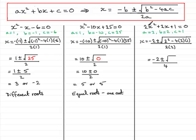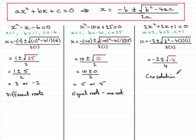What about this final equation: 2x squared plus 2x plus 1 equals 0? A is 2, b is 2, c is 1. Putting the values through the quadratic formula, what we've got in the square root is 4 minus 8. 4 minus 8 is minus 4. So what is the square root of minus 4? It's certainly not minus 2, because minus 2 times minus 2 is plus 4. If you did it on your calculator, your calculator would give you an error — you cannot square root a negative number. So what that means is that there are no solutions, there are no roots.